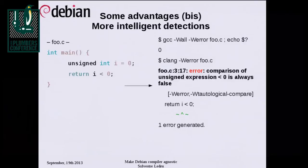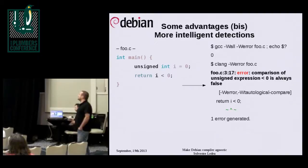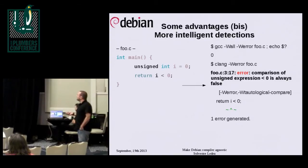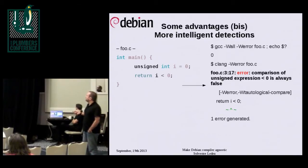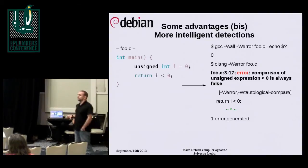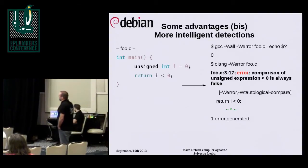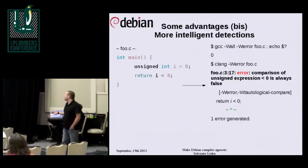Here is an example of basic C code that GCC, even with -Wall, is not able to detect. It's a very trivial example: we have an unsigned and we check that it is under zero. Clang is able to detect that and return a warning.